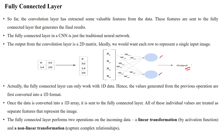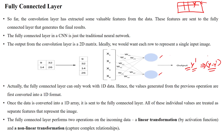We get the predicted output, called y-dash. In our dataset we also have the ground truth output label y, which is the actual output. The next step is to calculate the error, which is y minus y-dash. This is the cost, and we calculate it using a loss function.